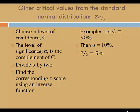When we divide alpha by 2, we get 5%. z of alpha over 2 is the inverse of 5%.